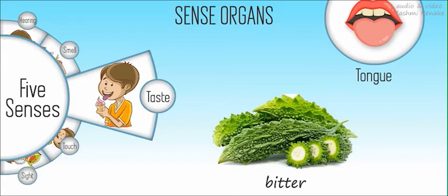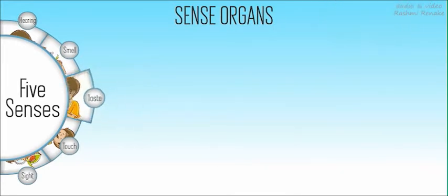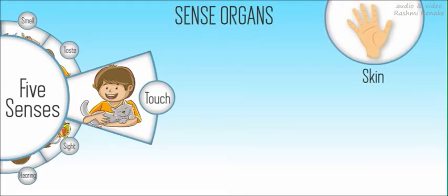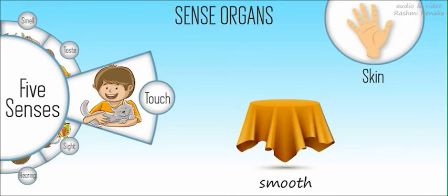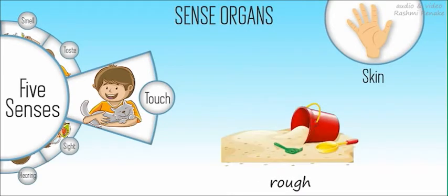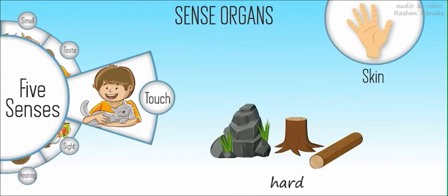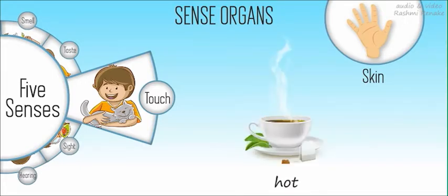Next, touch. We usually use our hands to feel things. We have skin on our hands so we can feel the texture of things. Things we touch can be smooth or rough, soft or hard, hot or cold.